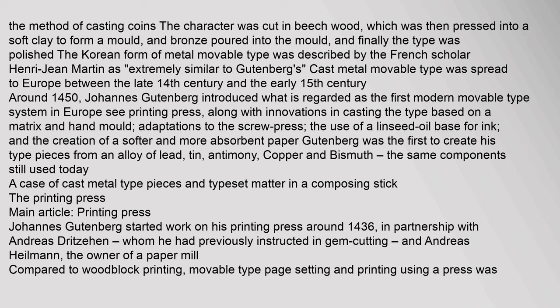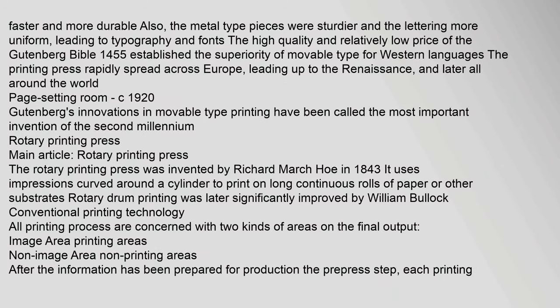Johannes Gutenberg started work on his printing press around 1436, in partnership with Andreas Dritzehen and Andreas Heilmann, the owner of a paper mill. Compared to woodblock printing, movable type page setting and printing using a press was faster and more durable. The metal type pieces were sturdier and the lettering more uniform, leading to typography and fonts. The high quality and relatively low price of the Gutenberg Bible of 1455 established the superiority of movable type for western languages. The printing press rapidly spread across Europe, leading up to the Renaissance, and later all around the world. Gutenberg's innovations in movable type printing have been called the most important invention of the second millennium.